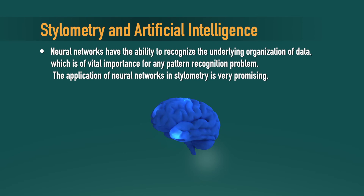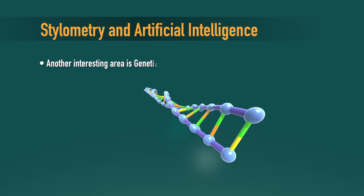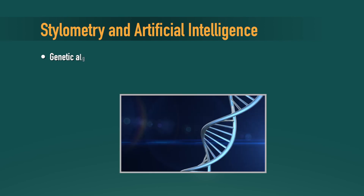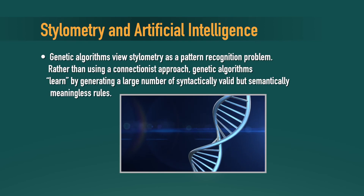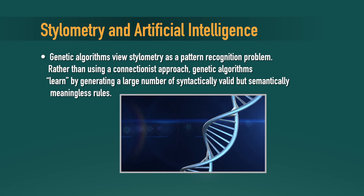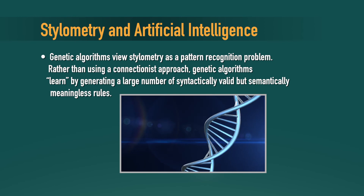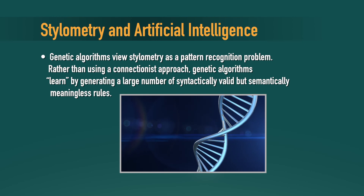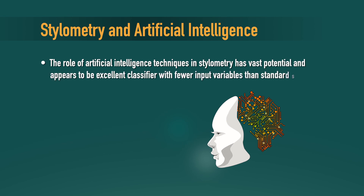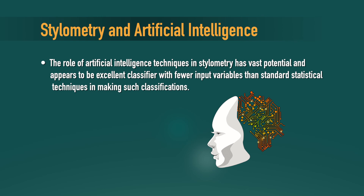The application of neural networks in stylometry is very promising. All branches of artificial intelligence have the potential to be applied in stylometry. Another interesting area is genetic algorithms — they view stylometry as a pattern recognition problem, rather than using a connectionist approach. Genetic algorithms use learning techniques by generating a large number of syntactically valid but semantically meaningless rules. The role of AI techniques in stylometry has vast potential, and it appears to be an excellent classifier with fewer input variables than the standard statistical methods generally applied in classification problems.